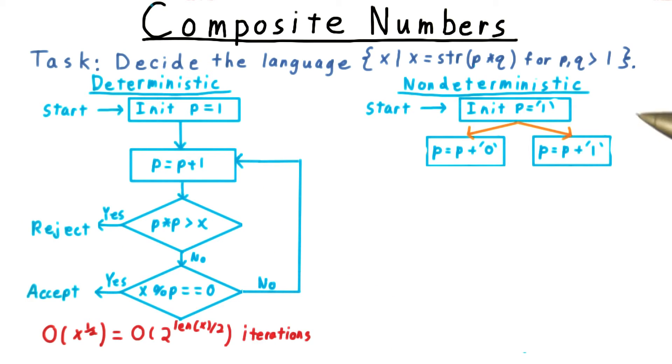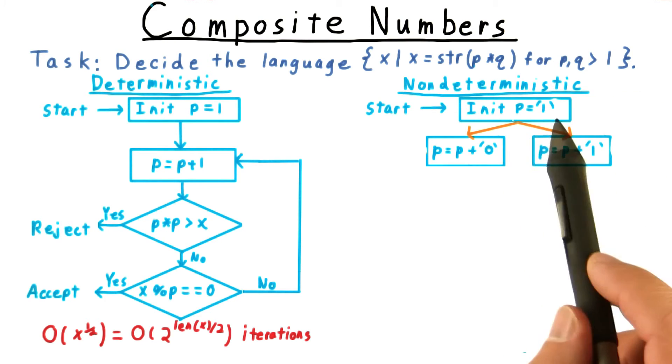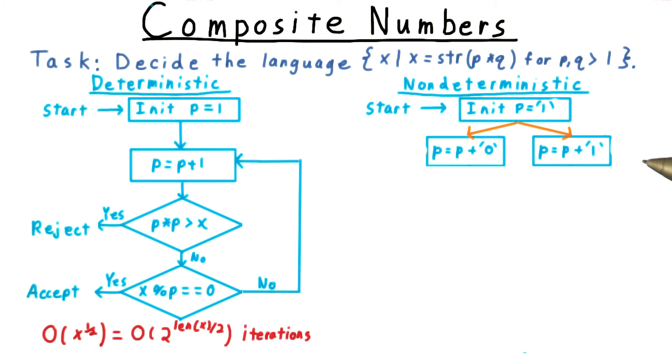On the other hand, with nondeterminism, we can do much better. We initialize p so that it's represented on its own tape as the number one written in binary.